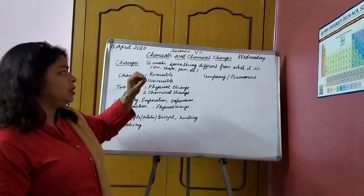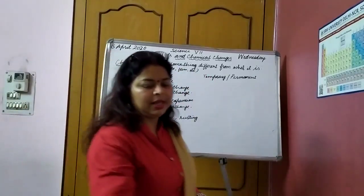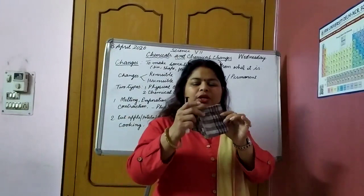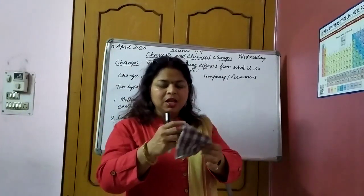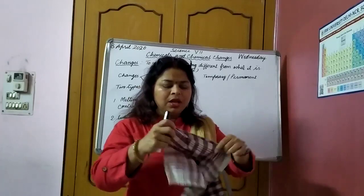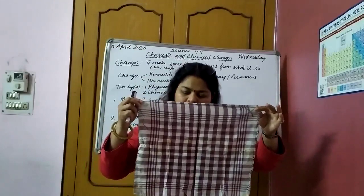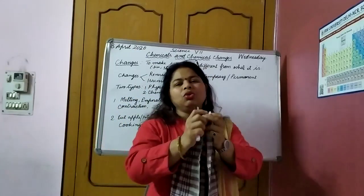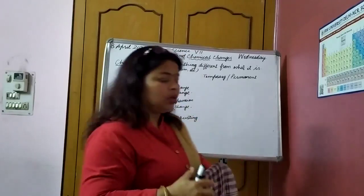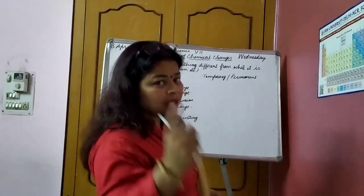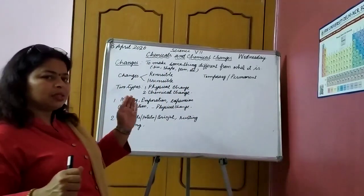We say an object has gone through change when it becomes something different from what it was. Like this duster — now it is folded, its form, size, and shape are completely different. If I unfold it, it is not the same as it was earlier. So, the duster has gone through change. This was the chapter you learnt in your 6th class. So, let us go further.